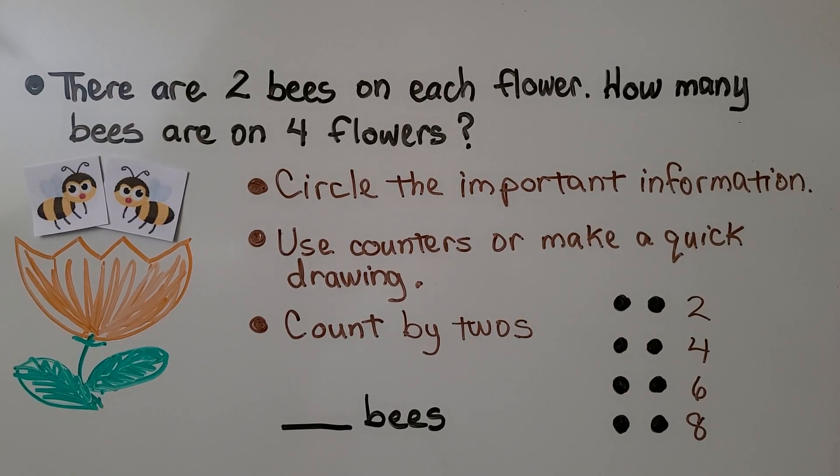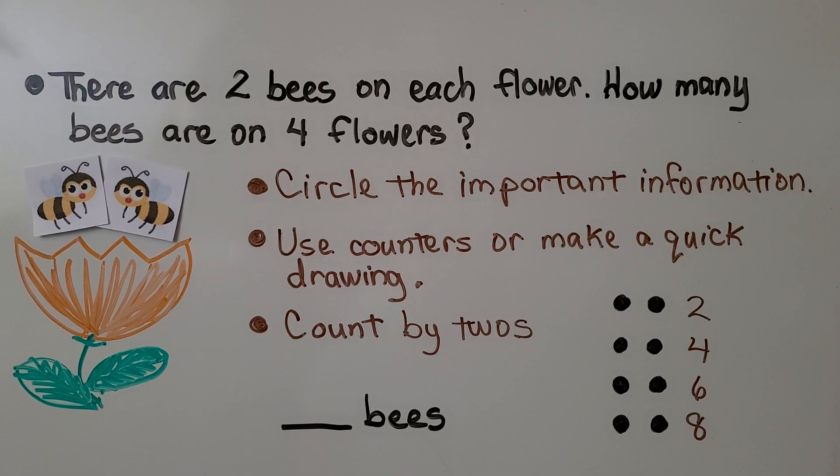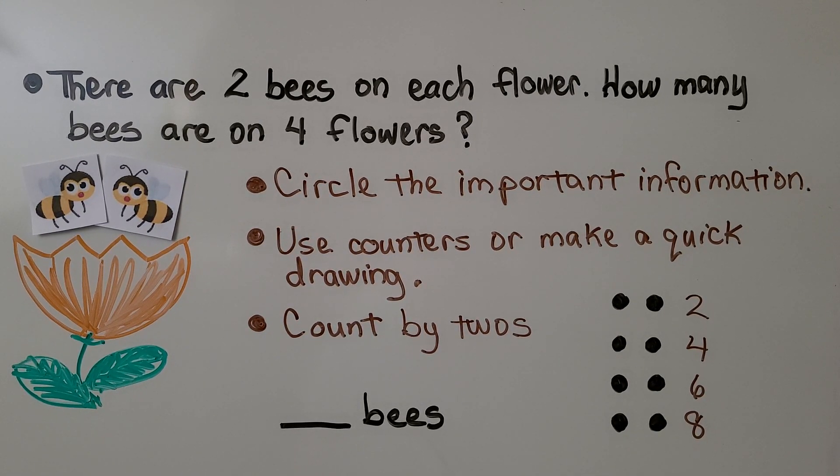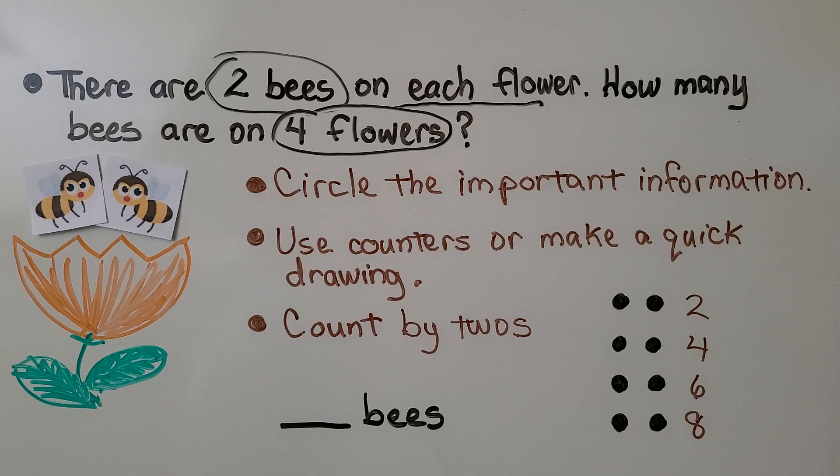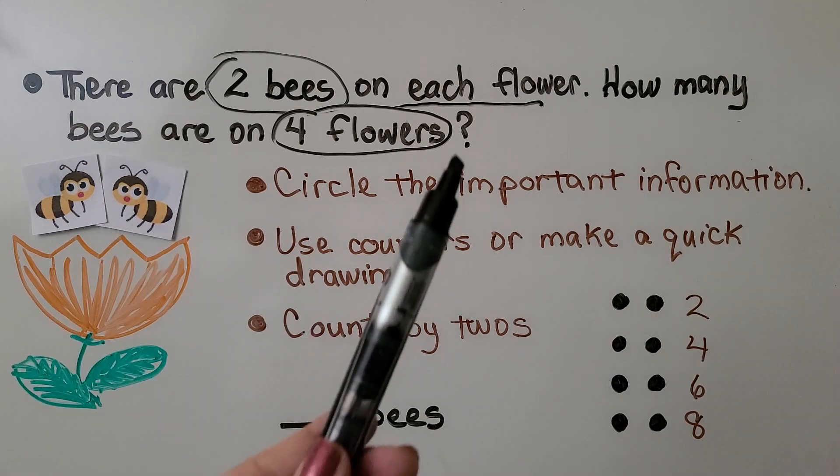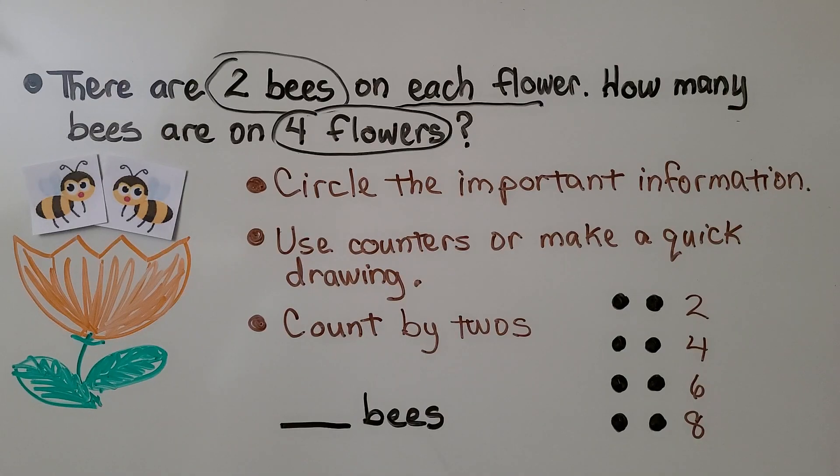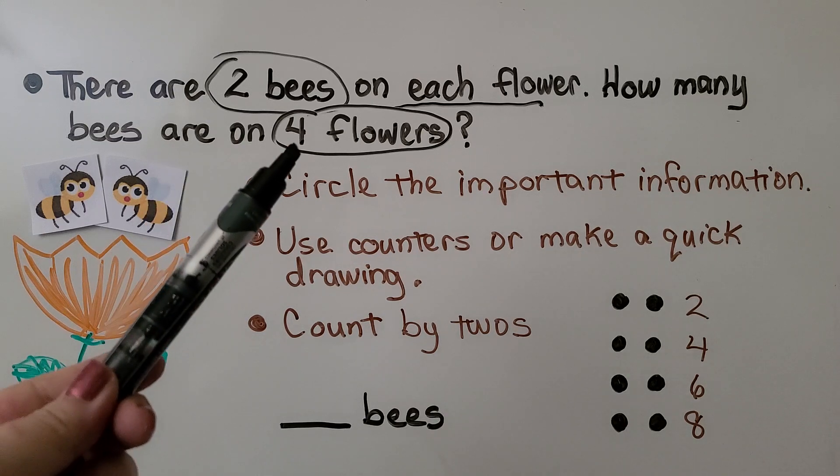So when we have a problem like this, there are two bees on each flower. How many bees are on four flowers? We first circle the important information. There's two bees. We could even underline that it's each flower to help us. And we have four flowers.